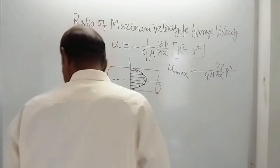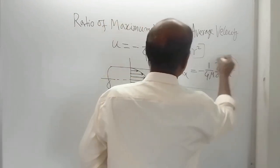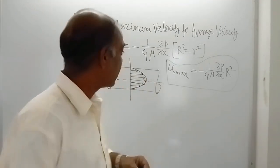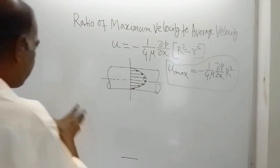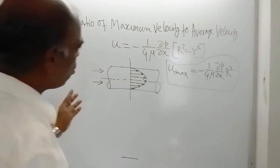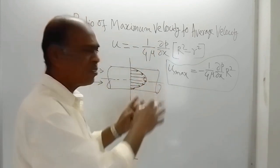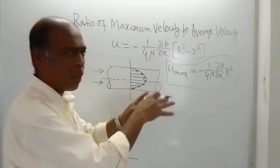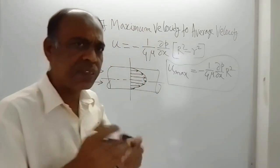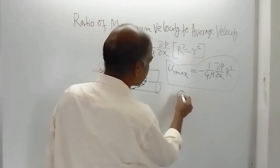The topic now is the ratio of maximum velocity to average velocity. Maximum velocity is known to us. Now we need to get an expression for average velocity. The average velocity is obtained by dividing the volume flow rate — the discharge through the pipe — by the cross-sectional area.